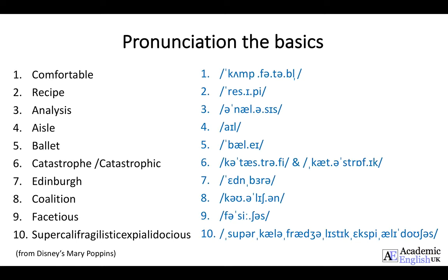The seventh word is the capital of Scotland, which is 'Edinburgh'. Edinburgh. The eighth is 'coalition'. Coalition. The ninth is 'facetious'. Facetious. And the tenth is just a fun word from Disney's film Mary Poppins — it's pronounced 'supercalifragilisticexpialidocious'. Supercalifragilisticexpialidocious. And it's just fun, really. The stress is on the final two syllables: 'docious'.